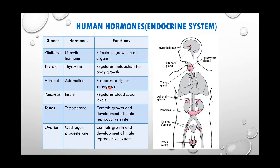Adrenal glands secrete adrenaline, which prepares the body for emergencies. During physical activities requiring extensive muscular strength, the body must be ready — palpitations are high, heartbeat is high, and a lot of oxygen is needed for the muscles. Before such activity, the body should be ready, and adrenaline does that. Once adrenaline is secreted by the adrenal glands, the body is ready for an extensive physical workout — we call this an adrenaline rush.